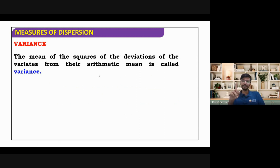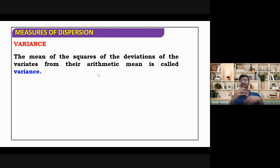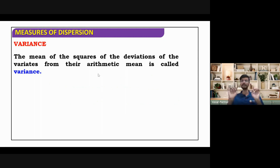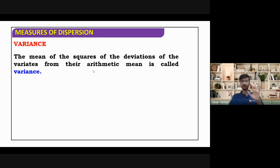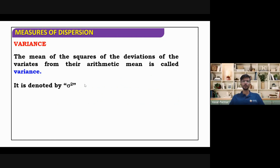First, we need to find the mean. Then we need to find their deviations from the mean — that means we have to subtract them. And when we square them and add all of them, we will get variance. It's better understood with examples. It is denoted by sigma squared. You must know this notation.